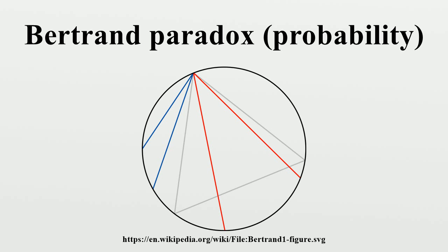Method 2 is the only solution fulfilling the transformation invariants present in certain physical systems, such as statistical mechanics and gas physics, as well as in Jaynes's proposed experiment of throwing straws from a distance onto a small circle. Nevertheless, one can design practical experiments that give answers according to the other methods. For example, to arrive at Method 1, one can affix a spinner to the center of the circle and let two independent spins mark the chord endpoints. For Method 3, one could cover the circle with molasses and mark the first point a fly lands on as the midpoint. Several observers have designed such experiments and verified the results empirically.